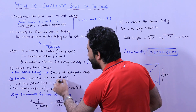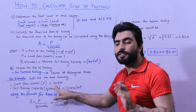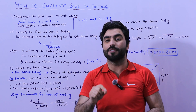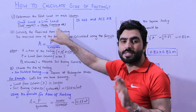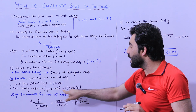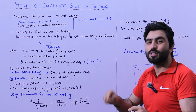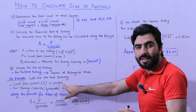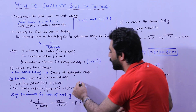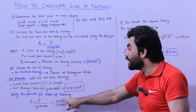Let's say you have the following data. The load from the column P is 100 kilonewtons — you may have 150 kN or 50 kN depending on your dead load plus live load calculation. Suppose we have 100 kilonewtons. The bearing capacity of the soil is 150 kilonewtons per meter square, which is larger than the column load, as it should be.